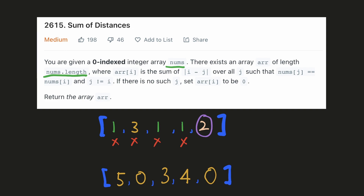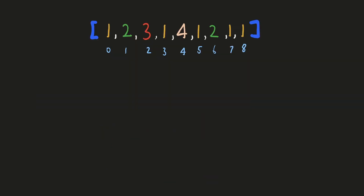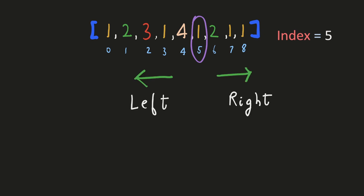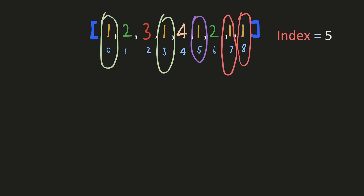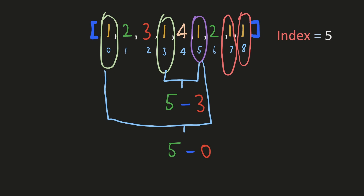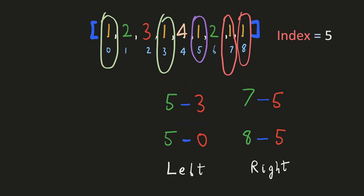Let's try to come up with an intuitive solution for this using a big example. Let's suppose we have to find the result for index 5 where the value is 1. We can see that the value 1 is repeated both on the left and the right side. Hence we have to calculate the sum of the distances on both sides and then add them. For the left side this will be the difference of the indices and hence the distance, and similarly these would be the sum of the distances for the left and right side.